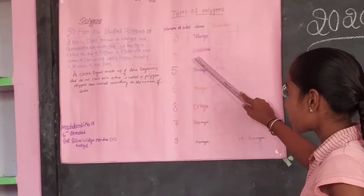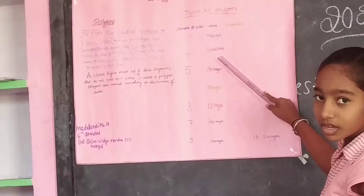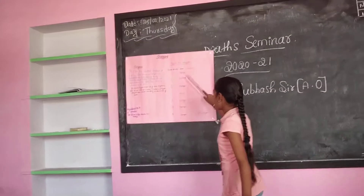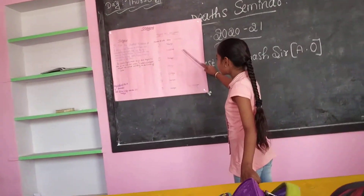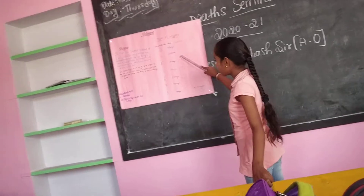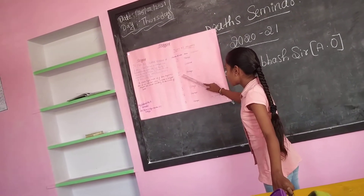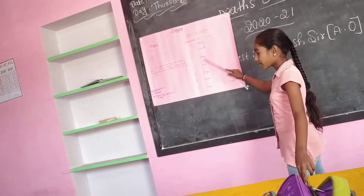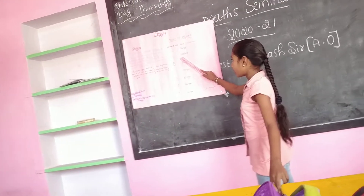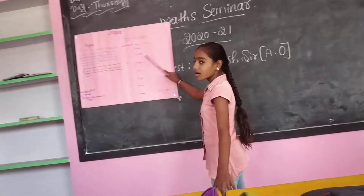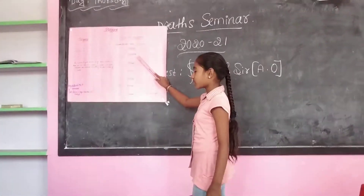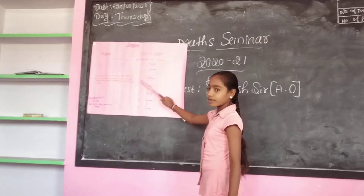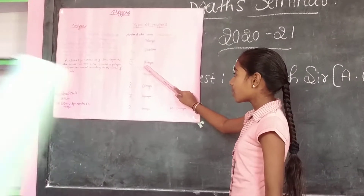Four sides. Polygons. Three sides. Five sides. Polygons. Five sides. Five sides. One, two, four. Five sides.